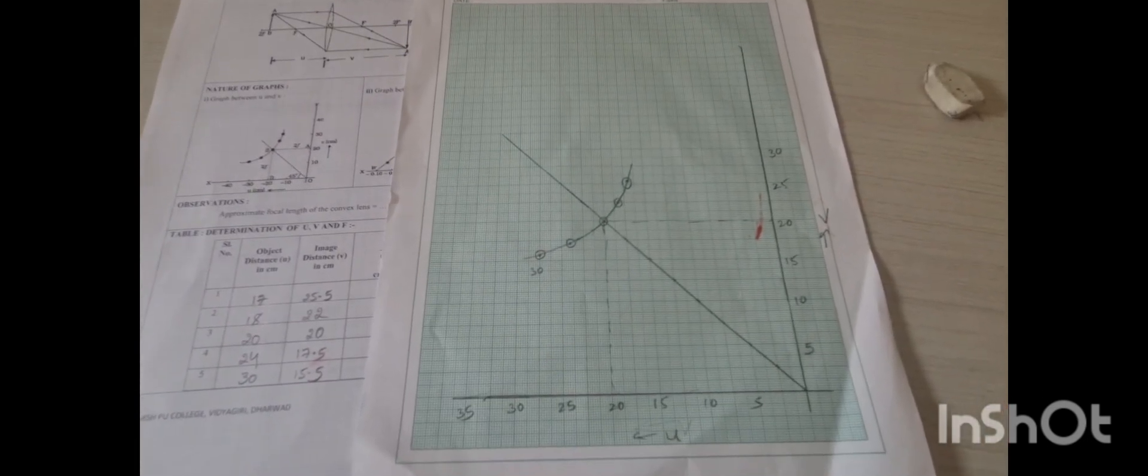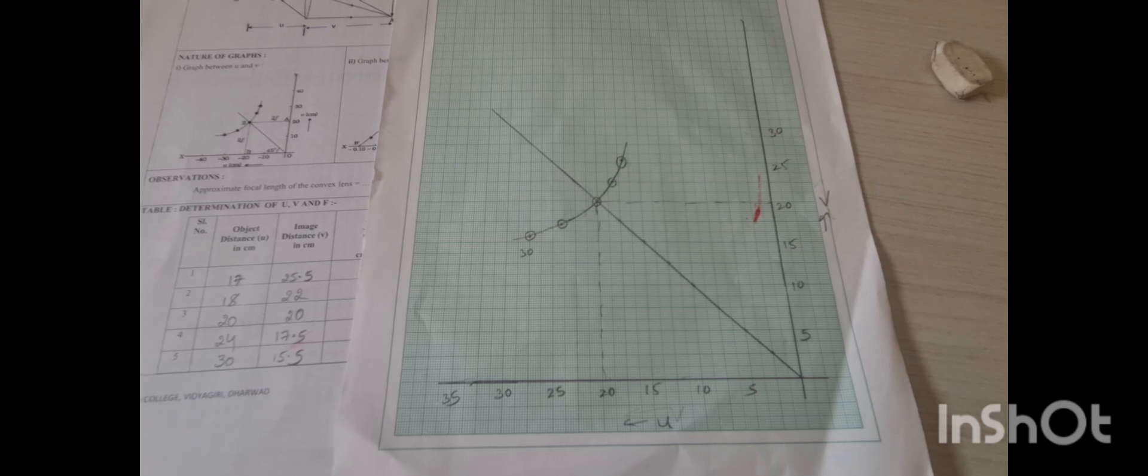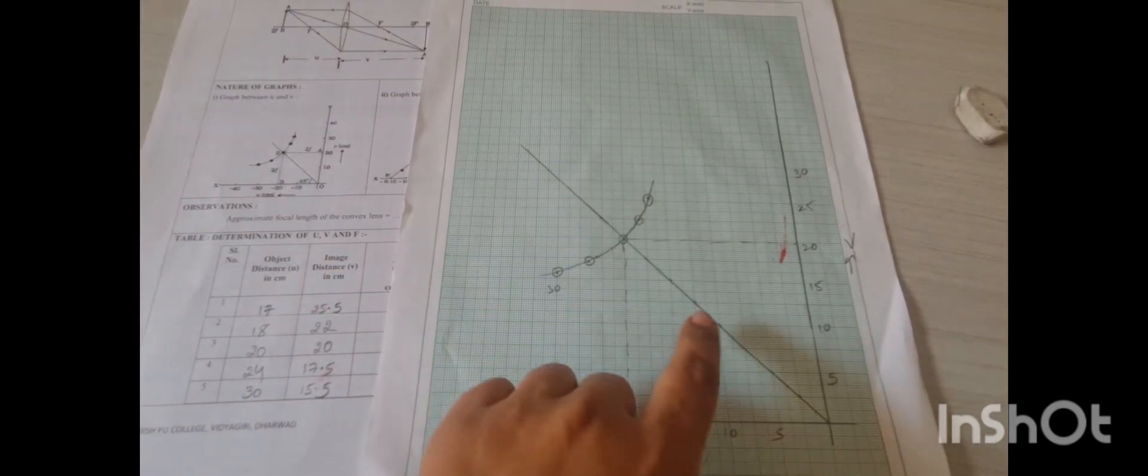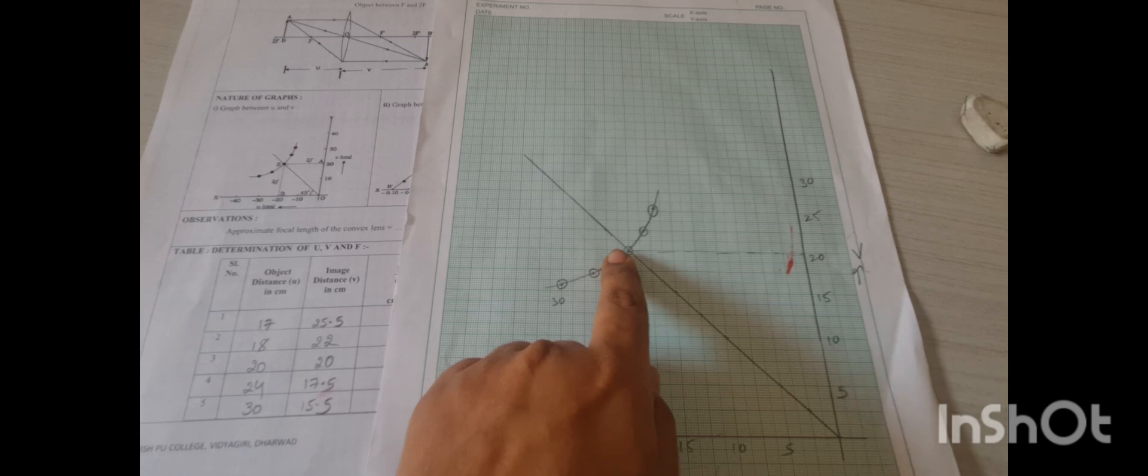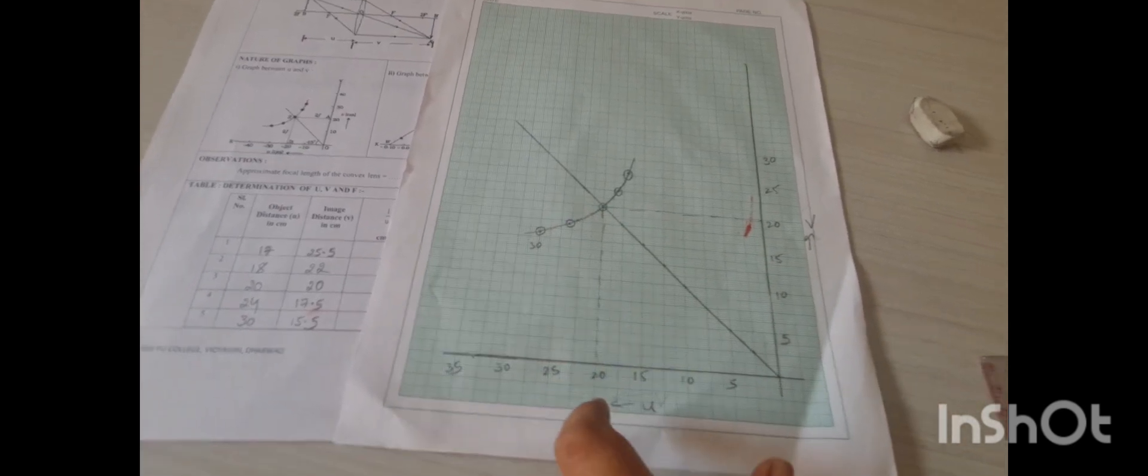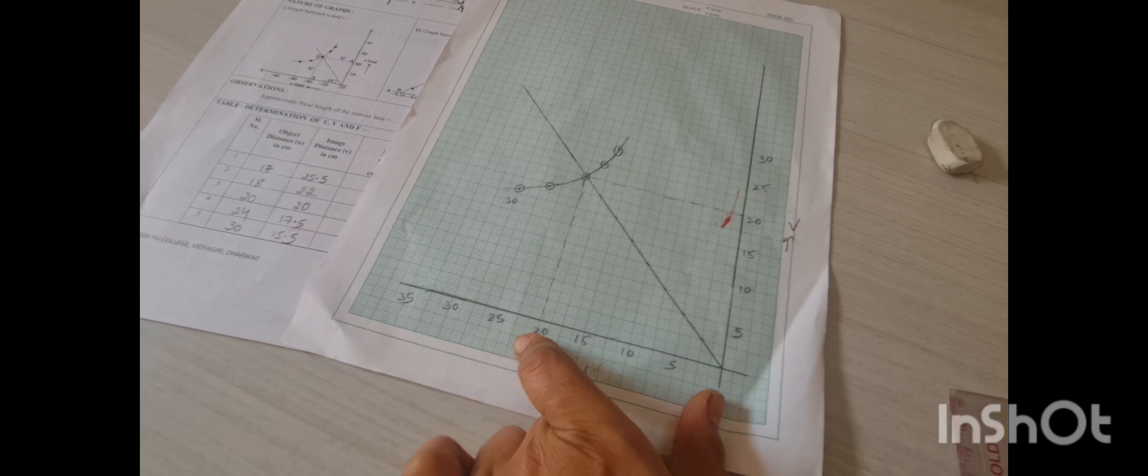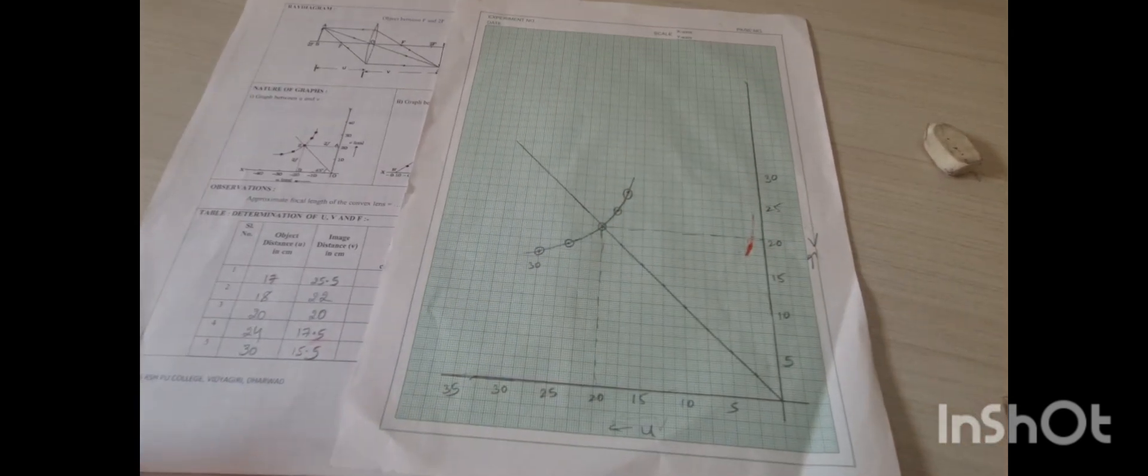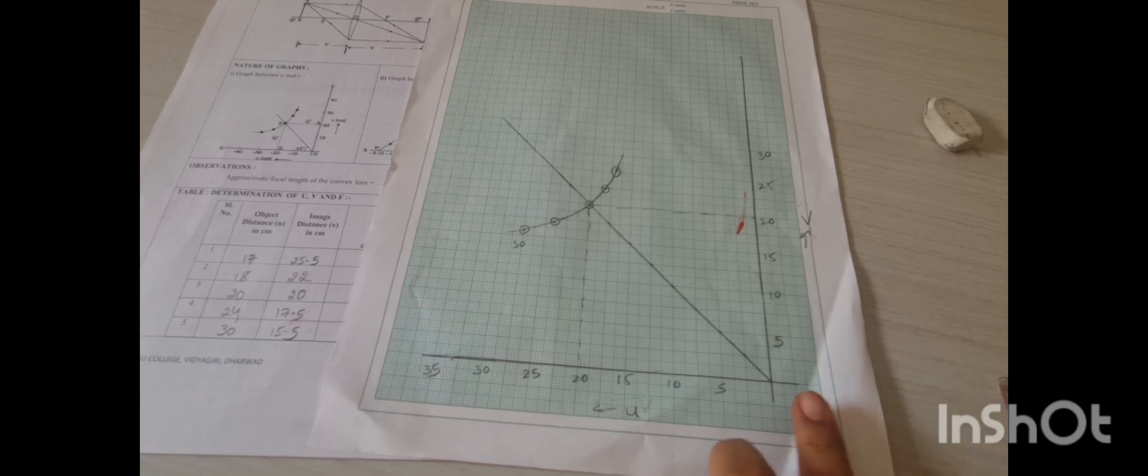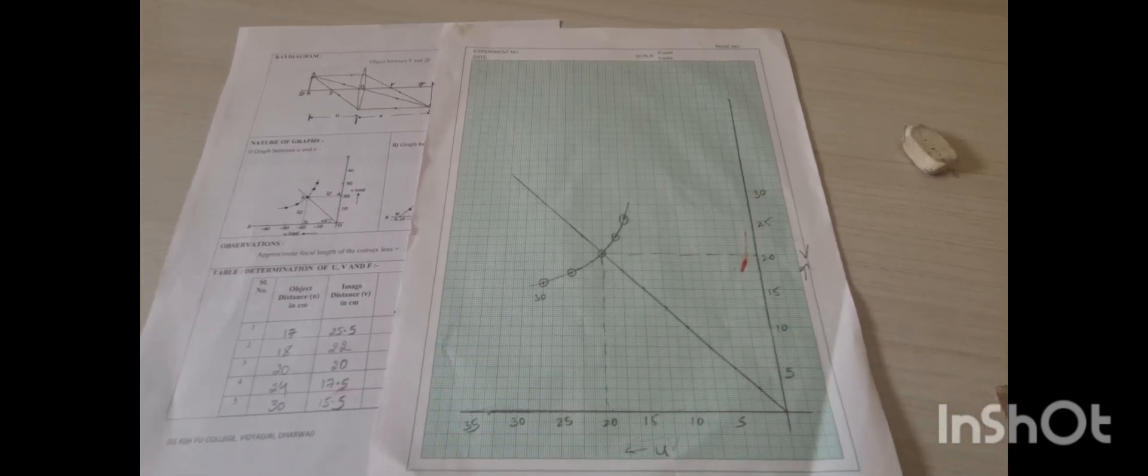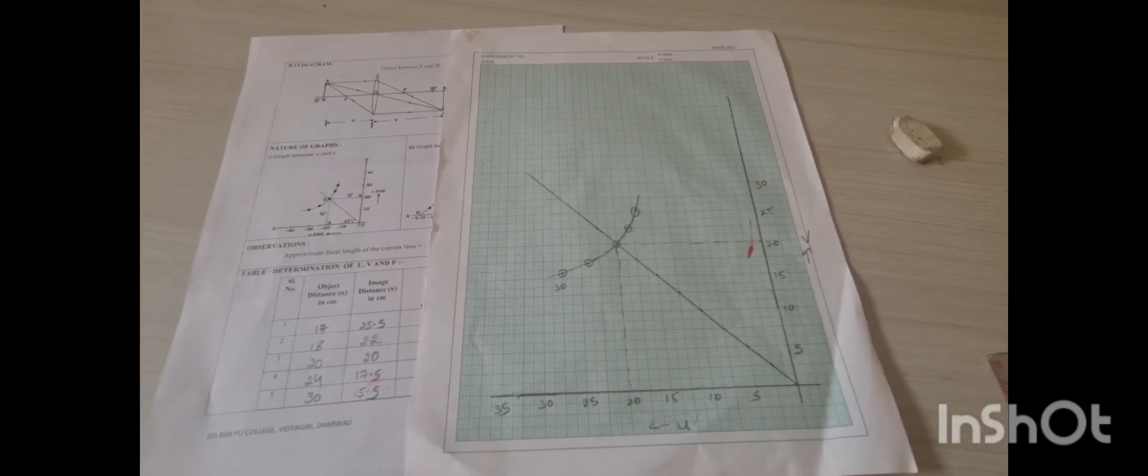Using these u and v values, plot the u-v graph. After plotting the graph, draw a line at an angle of 45 degrees. Wherever this line cuts the graph, from there draw a horizontal line and a vertical line. This value is taken as OA, and this value is taken as OB. The focal length can be calculated by using the formula: (OA + OB) divided by 4. This gives you the focal length of the given convex lens.